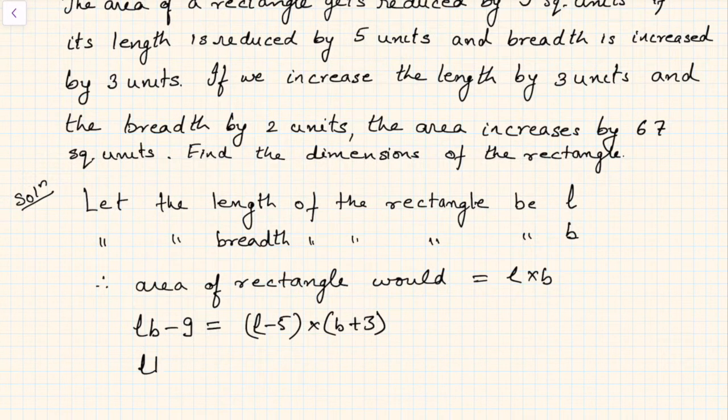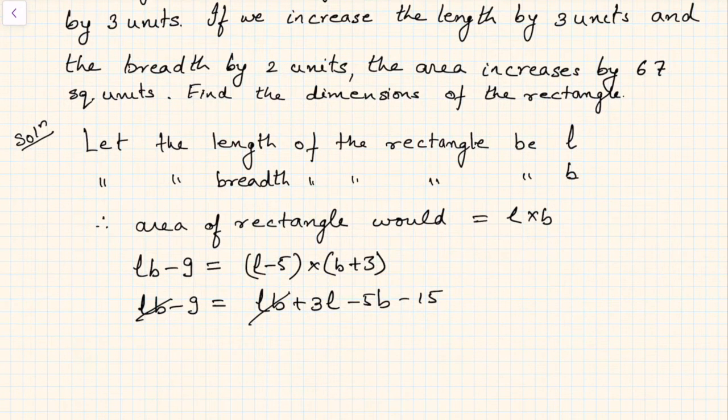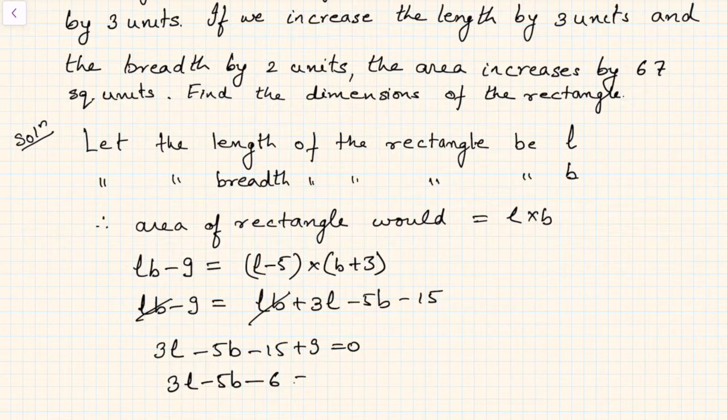You can simplify it and write LB minus 9 equals LB plus 3L minus 5B minus 15. This LB and this LB will get cancelled, and you will get 3L minus 5B minus 15 plus 9 equals 0. So simplifying, you will get 3L minus 5B minus 6 equals 0. Let it be equation number 1.